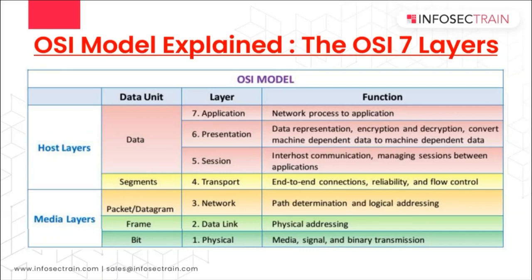Segments are basically the part where the data you have will be divided into multiple different pieces, so that communication can continuously go on — that's what we call segments. As soon as the network path or network address is determined, those segments are converted into packets or datagrams — packets in the case of TCP, datagrams in the case of UDP.